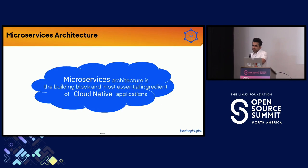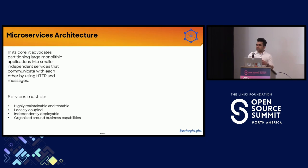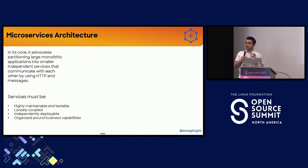What is microservices architecture and where does it fit? Microservices architecture is the building block and most essential ingredient of cloud native applications. In its core, it promotes partitioning large monolithic applications into smaller services that communicate with HTTP and messages. Your services must become highly maintainable, loosely coupled, and independently deployable — completely decoupled from your infrastructure and other services — and all those smaller pieces need to be organized around business functionality.